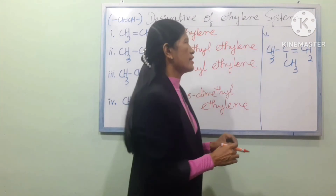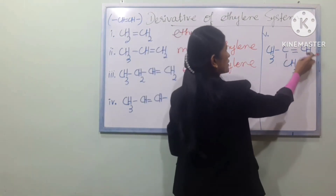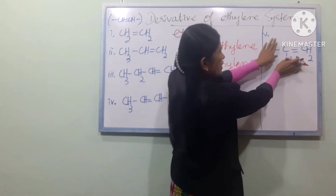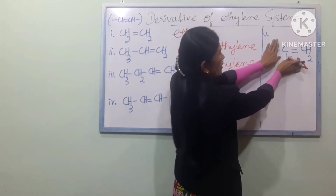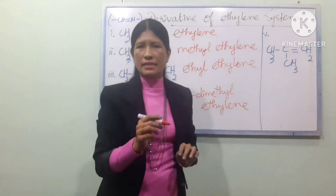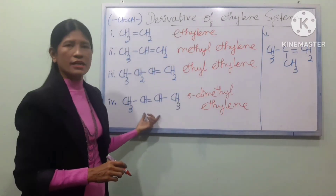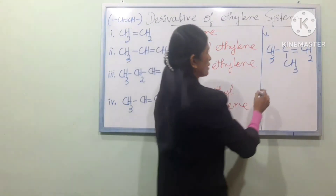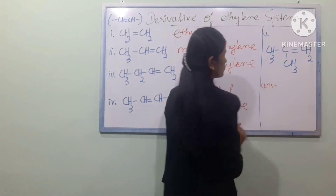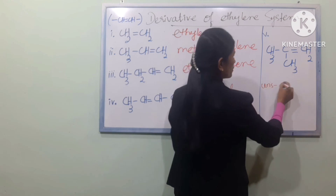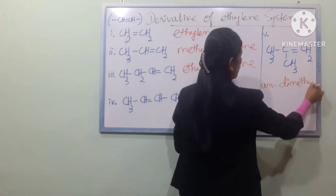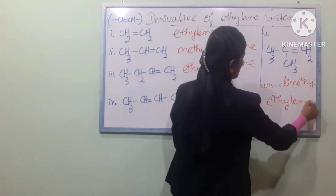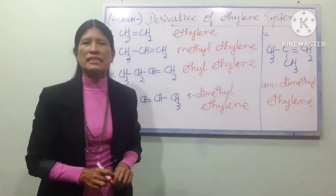Derivatives of ETHYLENE include C1CH2 forms. For a symmetrical case, we call it symmetrical DIMETHYL-ETHYLENE. For an unsymmetrical case, we call it UNS — unsymmetrical DIMETHYL-ETHYLENE.